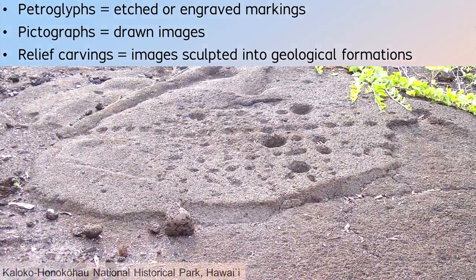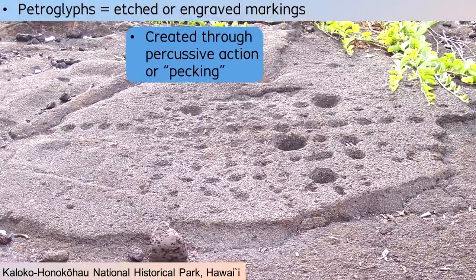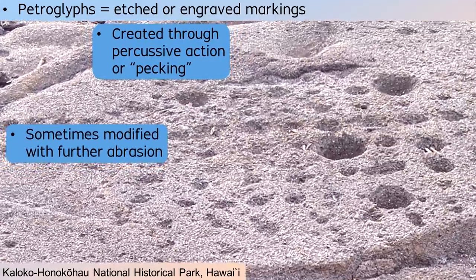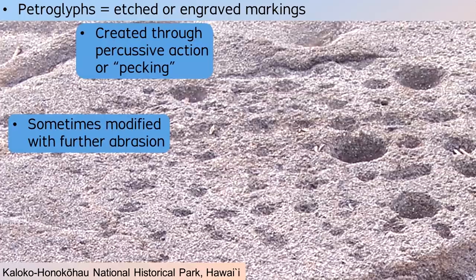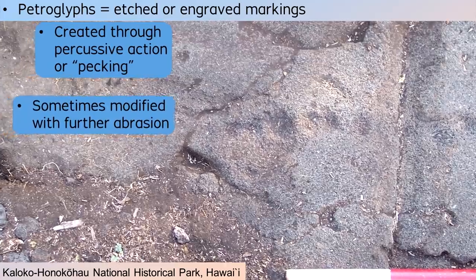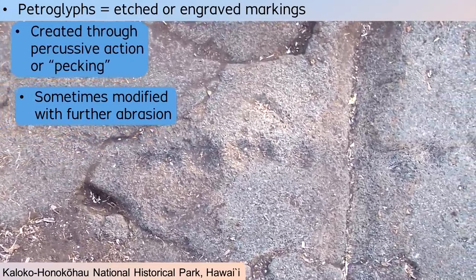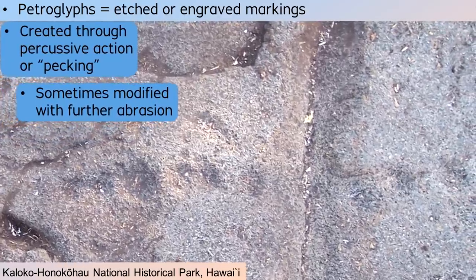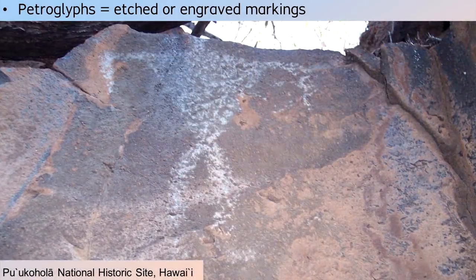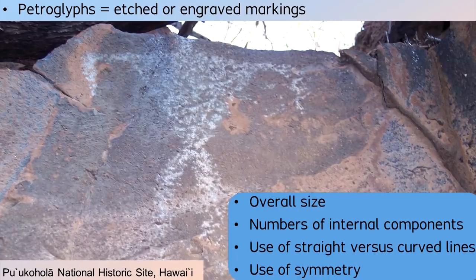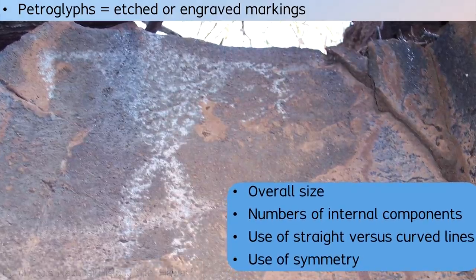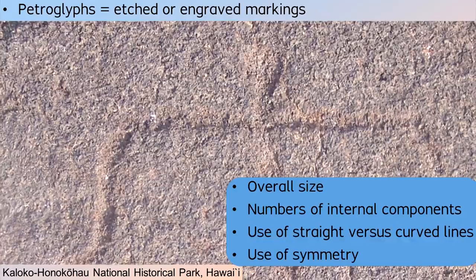Petroglyphs most often were created through percussive action or pecking, sometimes modified with further abrasion. The physical shapes of indentations can reveal the shapes of the tools that made them, but often the markings have been modified through repeated percussion and abrasion. Nonetheless, differences can be noted in the physical dimensions of width and depth of petroglyph markings. Petroglyph images could also be described in terms of their overall size, numbers of internal components, use of straight and curved lines, use of symmetry, and other observations.